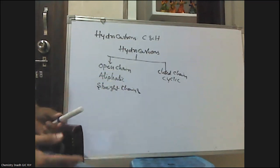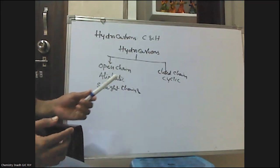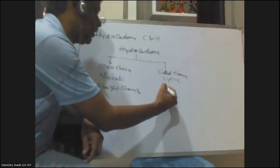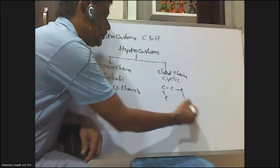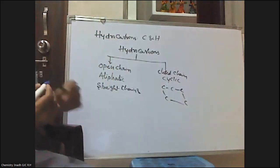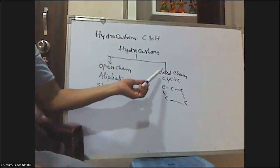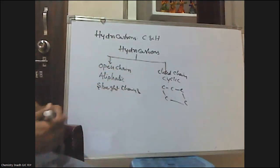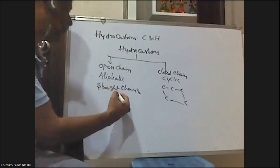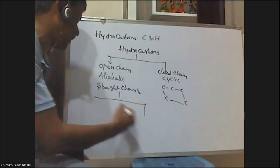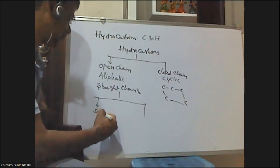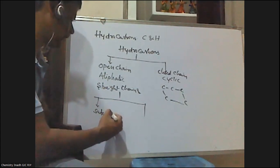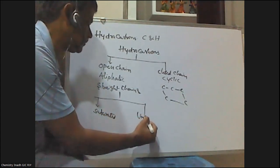Closed chain compounds contain cyclic structures, where the terminal carbons join together, and those are called closed chain or cyclic compounds. Open chain compounds are again classified into two types: one is saturated and another is unsaturated.